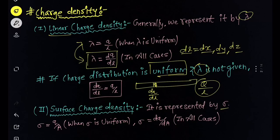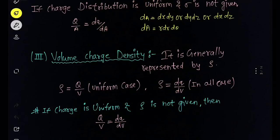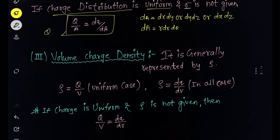Surface charge density is represented by sigma. For the uniform case, sigma equals charge divided by area. In general, sigma equals dq over dA. If charge distribution is given as uniform and sigma is not given, the ratio of charge spread over total area equals small charge spread in small area. The area element dA can be written as dx·dy, dy·dz, or dx·dz in Cartesian coordinates, as r·dr·dθ in polar coordinates, and accordingly for spherical or cylindrical polar coordinates.